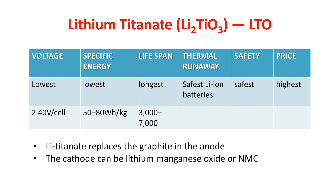You might have noticed some difference. In all other types of lithium-ion batteries, generally the cathode — the positive electrode — is being replaced by some metal oxide, and the negative electrode generally remains graphite. But in LTO, the negative electrode anode is being replaced by lithium titanate, and the cathode is of lithium manganese oxide or nickel manganese cobalt oxide.